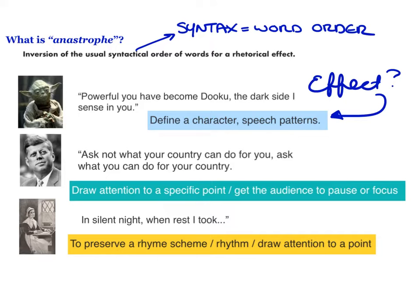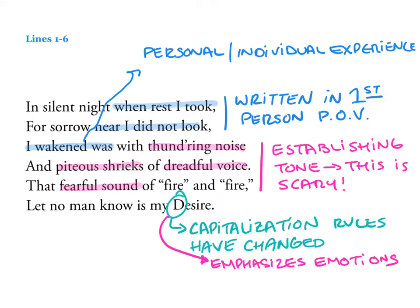Now that we've identified what anastrophe is, let's get into the poem. 'In silent night, when rest I took, for sorrow near I did not look. I wakened was, with thundering noise and piteous shrieks of dreadful voice. That fearful sound of fire and fire, let no man know is my desire.' In terms of Puritan literature, this is personal — an individual experience written in the first-person point of view. I also want to draw your attention to her diction. She uses words like piteous, shrieks, and dreadful — tone words that help establish how scary this moment is for her.